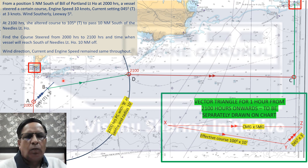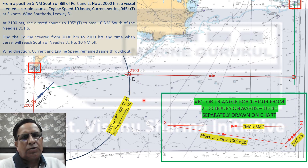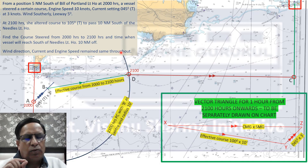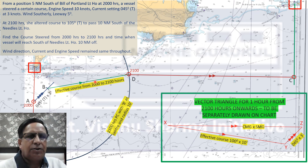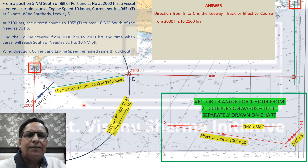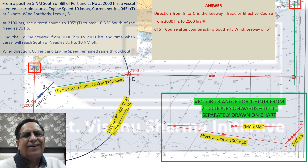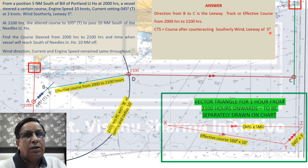Joining B to D gives the effective course of the vessel from 2000 to 2100 hours, because the vessel was also experiencing wind. Reading this off the compass rose and counteracting the southerly wind leeway of five degrees on this effective course gives us the course steered (CTS) between 2000 hours and 2100 hours.